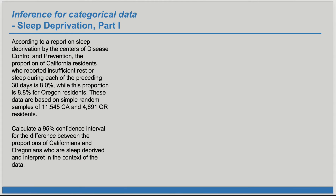According to a report on sleep deprivation by the Centers of Disease Control and Prevention, the proportion of California residents who reported insufficient rest or sleep during each of the preceding 30 days is 8%, while this proportion is 8.8% for Oregon residents. These data are based on simple random samples of 11,545 California and 4,691 Oregon residents. Calculate a 95% confidence interval for the difference between the proportions of Californians and Oregonians who are sleep deprived and interpret it in the context of the data.